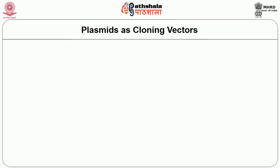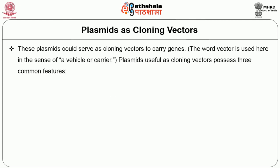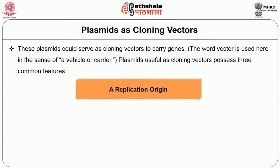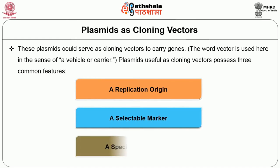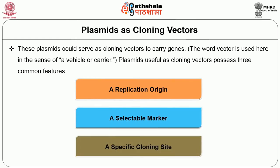Plasmids serve as cloning vectors to carry genes. The word 'vector' is used as a synonym for a vehicle or carrier — here, a carrier that carries the DNA sequence. Plasmids useful as cloning vectors possess three common features: a replication origin, a selectable marker, and a specific cloning site.